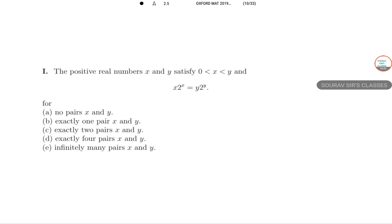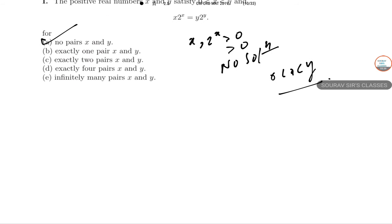Next, the positive real numbers x and y satisfying these two equations. Both x and 2^x are strictly increasing, and the product of them is also strictly increasing. So x·2^x therefore takes no values for which x is positive. In the given equation with 0 < x < y, it is not possible. So the answer to this question is no pairs of x and y.